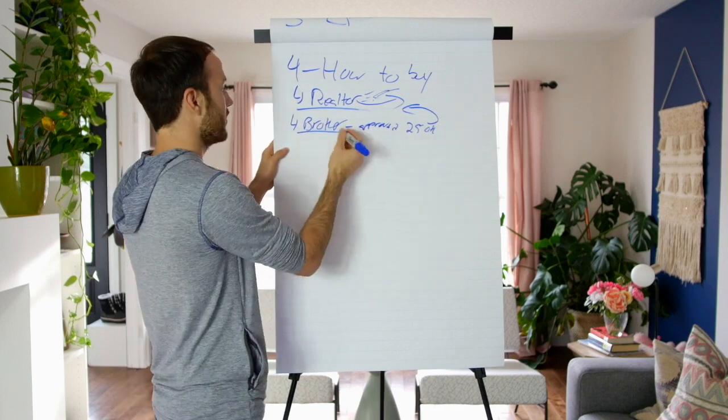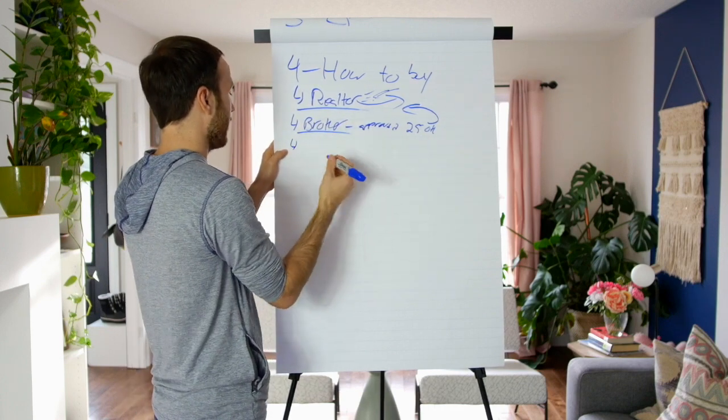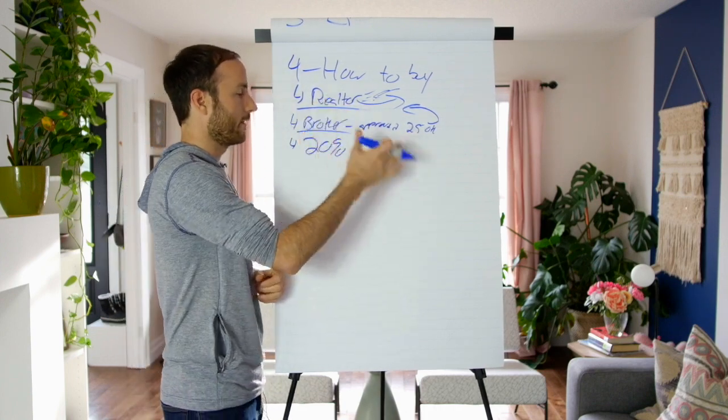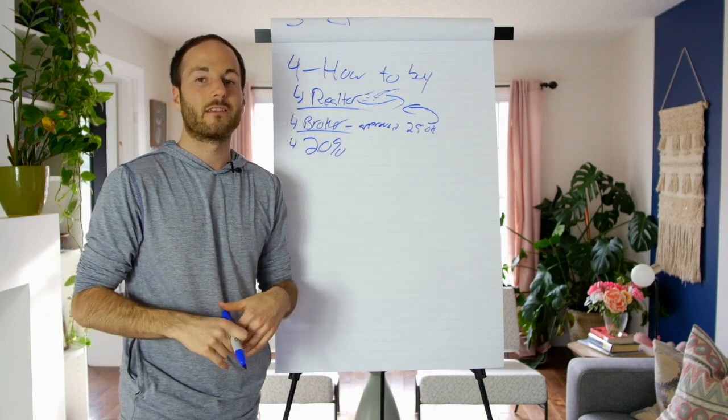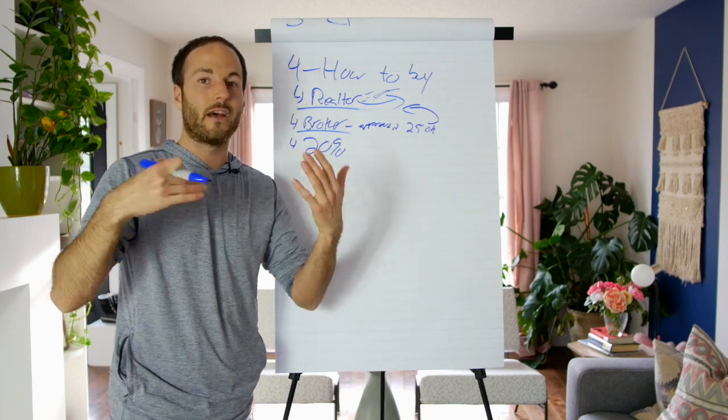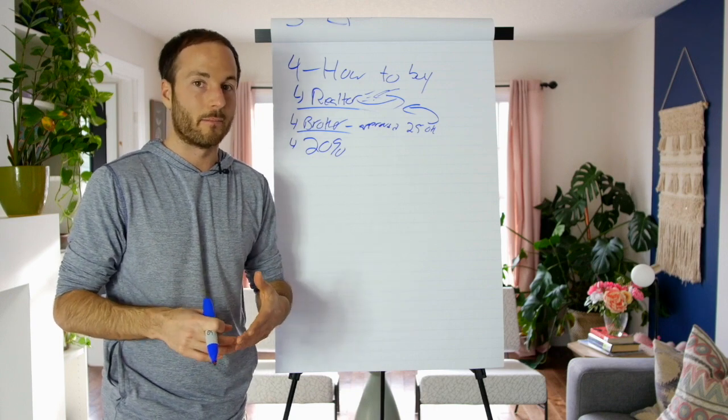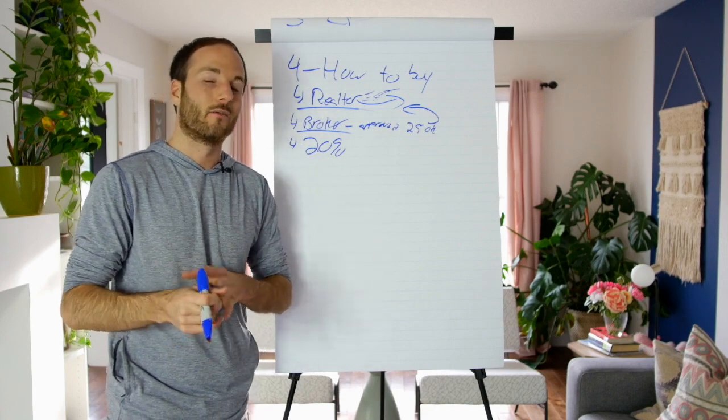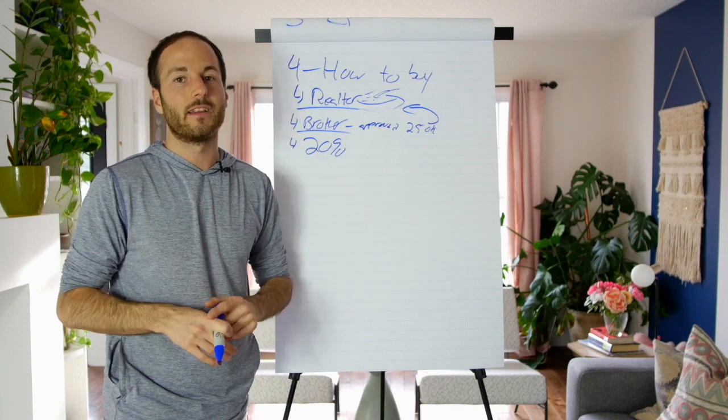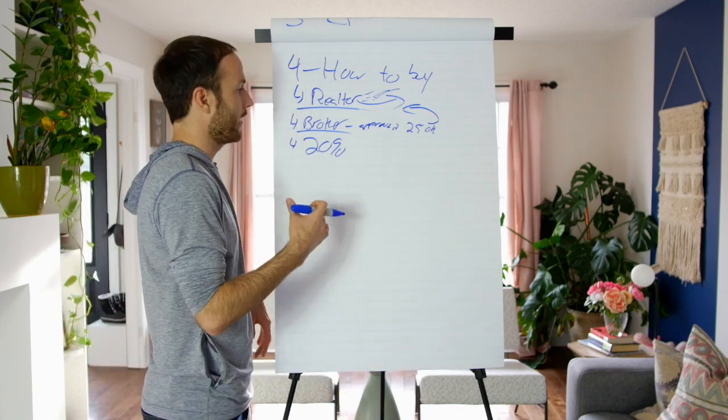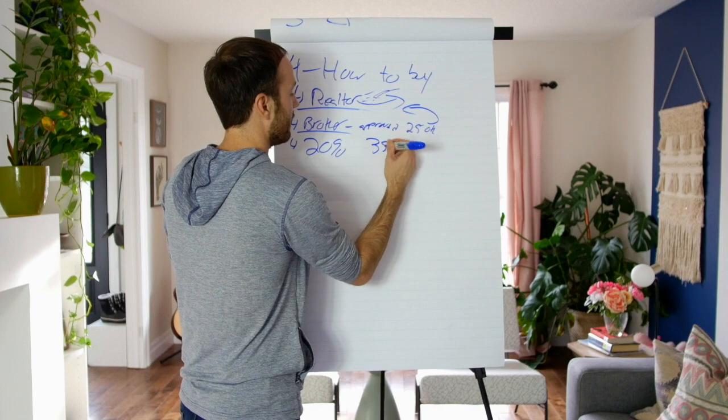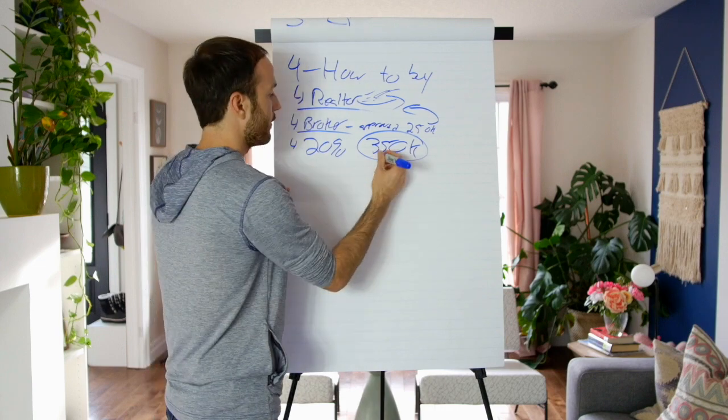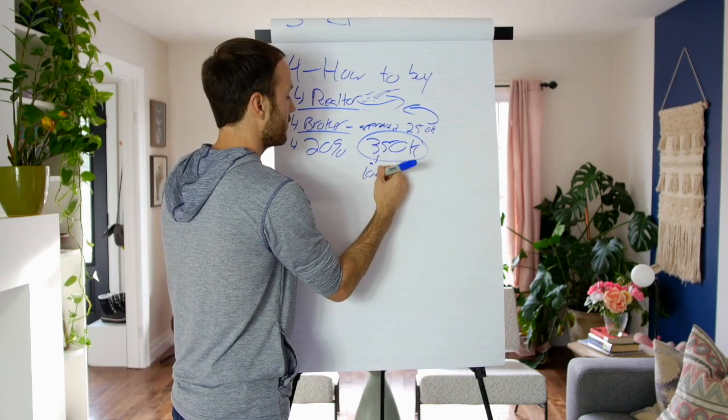So how we buy real estate is once you're approved, typically in North America, most of North America, you're going to have to put 20% down of the property. So if we're buying a hundred thousand dollar property, just to make things simple, it's $20,000 down payment for buying a $200,000 property. You need $40,000 down to buy it. Plus lawyer fees, plus land transfer tax if you have that in your area, property taxes, renovations. So maybe 60, 70,000 in total.